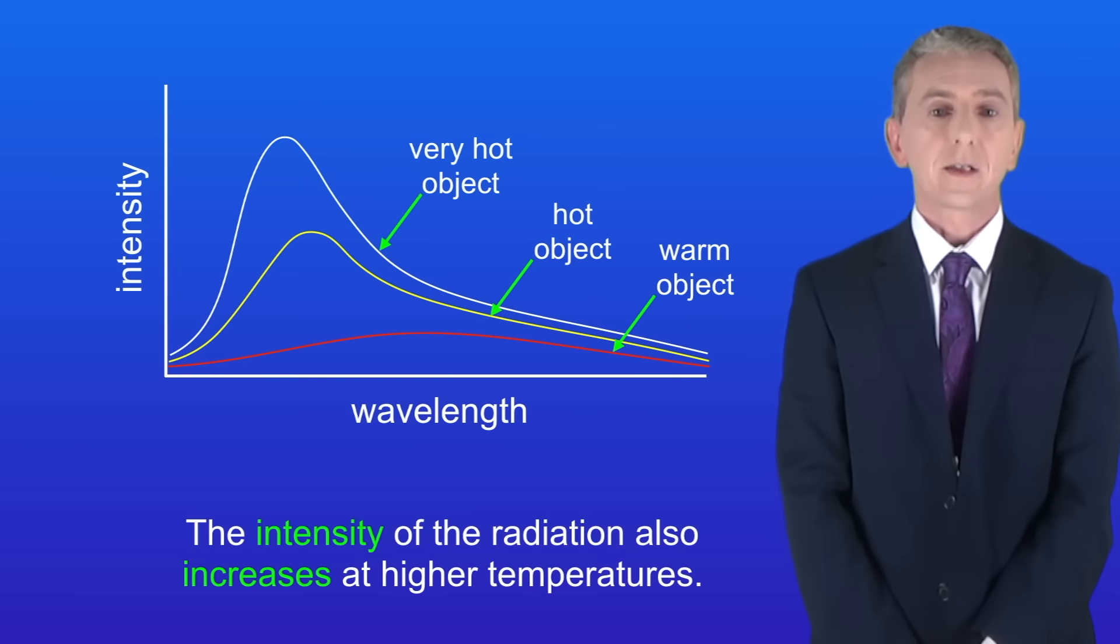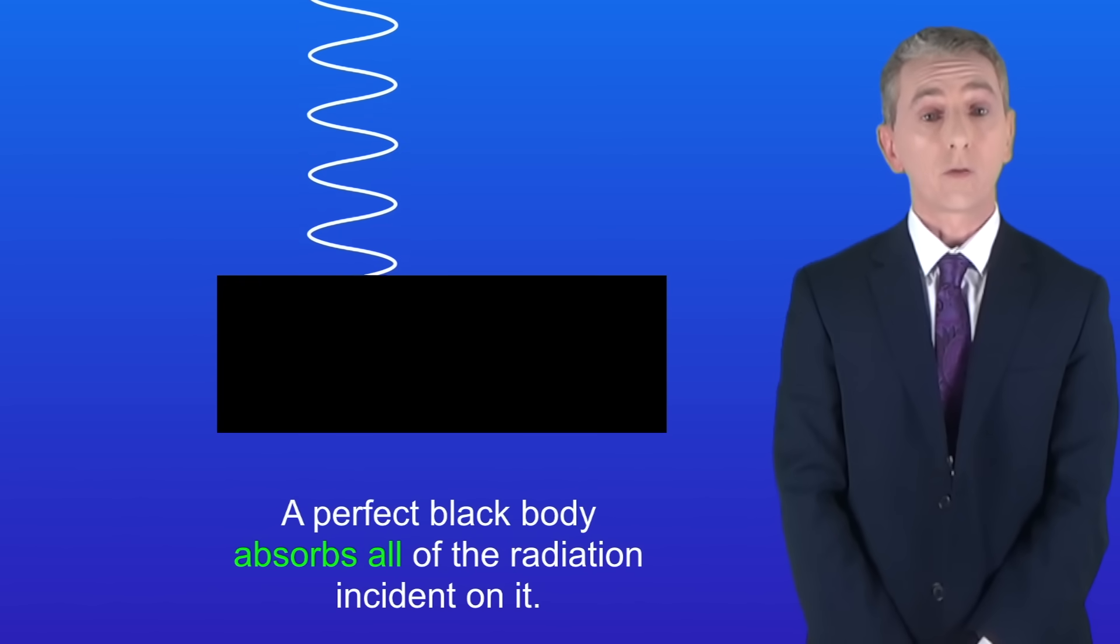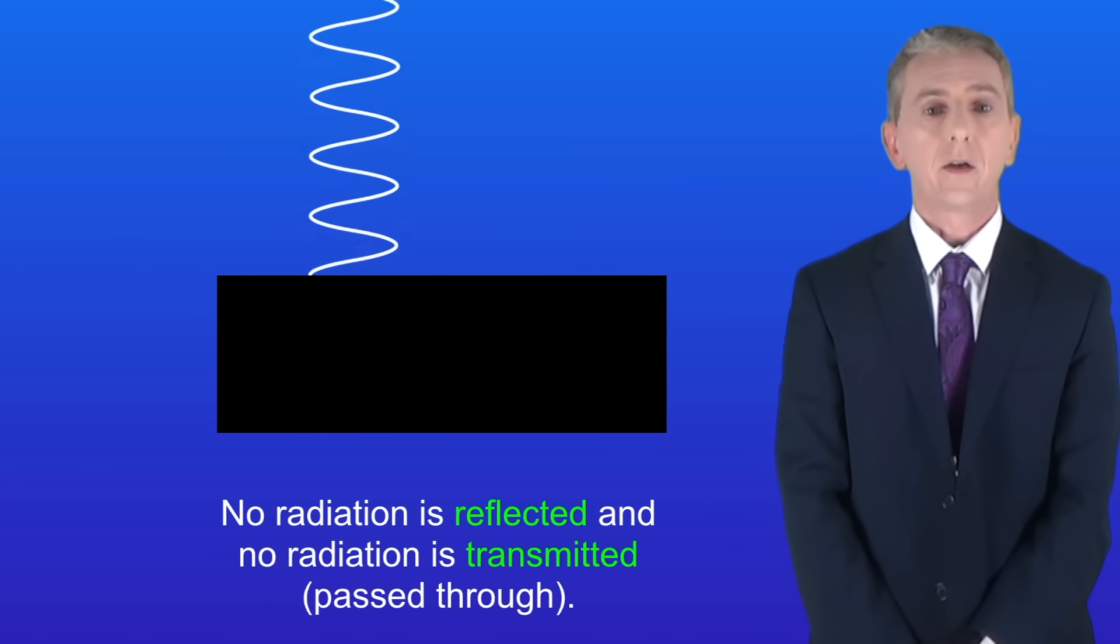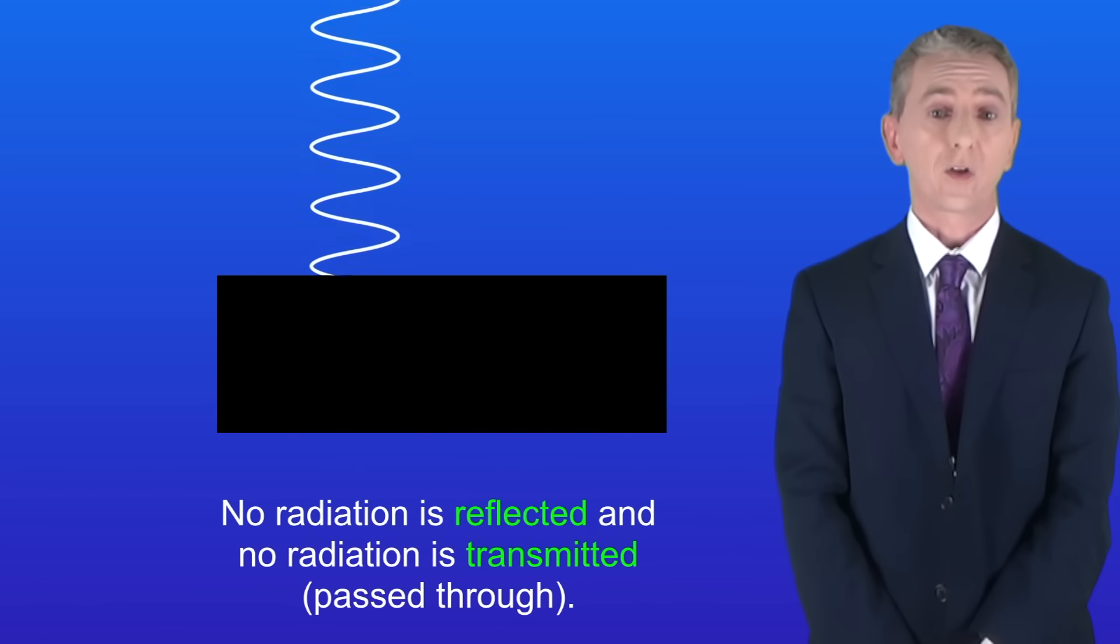Okay, we're going to look now at the idea of black body radiation. A perfect black body absorbs all of the radiation incident on it. No radiation is reflected and no radiation is transmitted, in other words passed through.